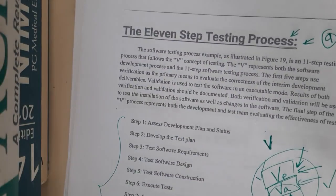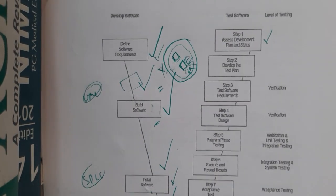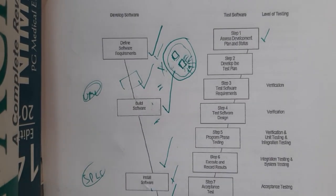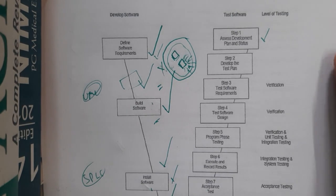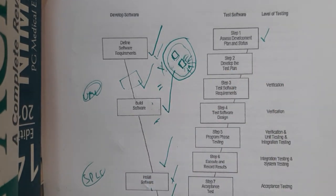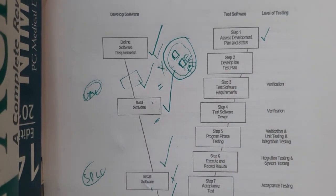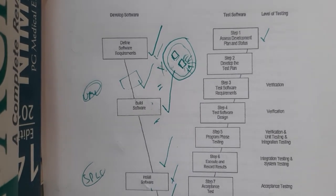So these are all the 11 steps of the software testing process or plan, and this is the V-diagram. I hope everyone got a basic idea. The video is around 14 minutes. In the next lecture we'll be going through the review of this particular unit. Thank you for watching.